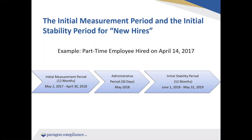For an individual classified as part-time, they begin their initial measurement period starting the 1st of the month following their date of hire — May 1, 2017 — running 12 months through April 30, 2018. For new hires, the IRS only allows a 30-day administrative period. If this employee has worked enough hours to be ACA full-time, coverage should be effective June 1, 2018, the first month of their initial stability period. They are also locked into their ACA status from June 1, 2018 through May 31, 2019.